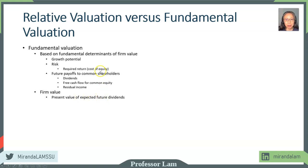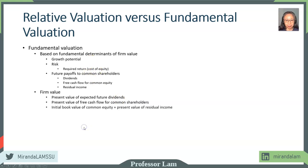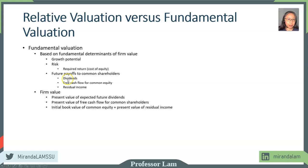The discount rate we use is the cost of equity. Or using free cash flow, we use the present value of free cash flow for common shareholders discounted at the cost of equity. And then for the residual income approach, we start with the initial book value and then add the present value of future residual incomes. So in all these methods, the value of the firm is the present value of future payoffs — those are fundamental valuation approaches.